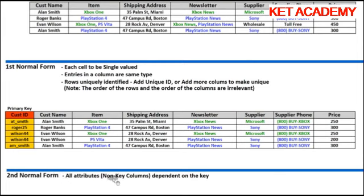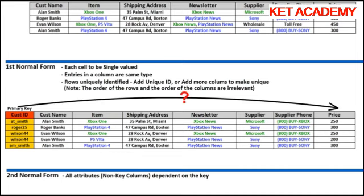Second normal form: all attributes - meaning non-key columns - must be dependent on the key. Which of these columns doesn't depend on the key? How about the price? Does the customer ID determine the price? In other words, does the price depend on who buys it? The answer is no - it doesn't matter who buys an Xbox One, the price will be the same whether Alan Smith or Evan Wilson buys it. So the key in the table doesn't determine this. We have columns that don't depend on the key, so those have to be separated out.